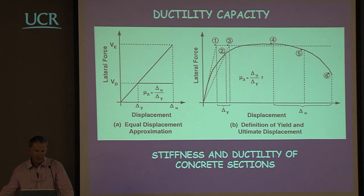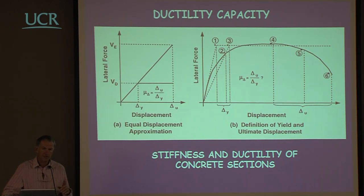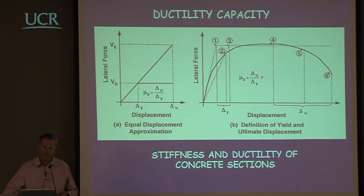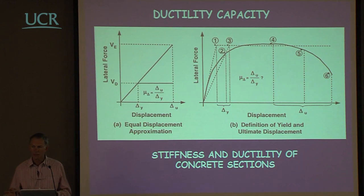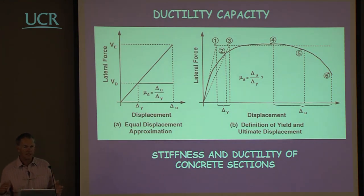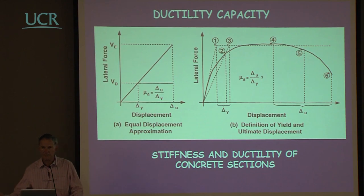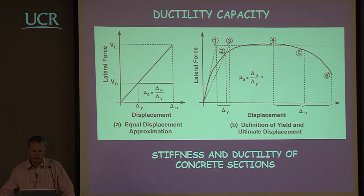Another aspect is that codes are typically based on force reduction factors dependent on a code committee's idea of what the ductility capacity of typical structural systems are — whether a frame, a wall building, or a bridge. These tend to be committee decisions, and the appropriate ductility or force reduction factor — or behaviour factor, whatever you like to call it — depends on where you are in the world rather than on rational analysis.